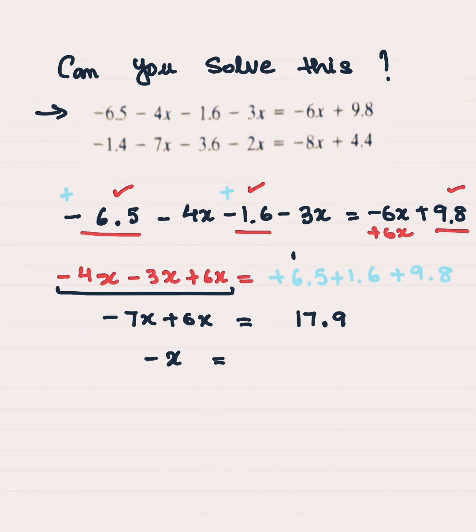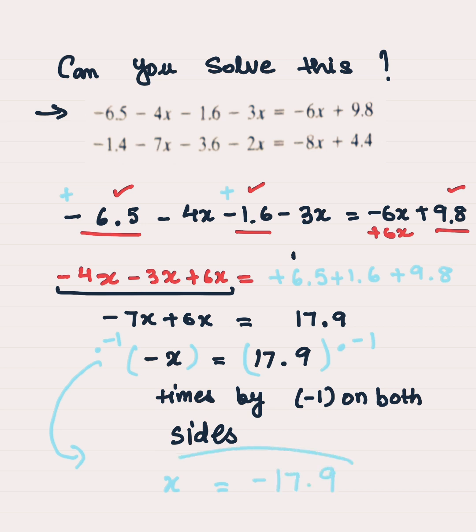Negative 7x plus 6x gives you negative x. Now remember, you cannot leave your answer as a negative variable, so you will multiply both sides by negative 1. When you multiply by negative 1 on both sides, this gives you x equals negative 17.9.